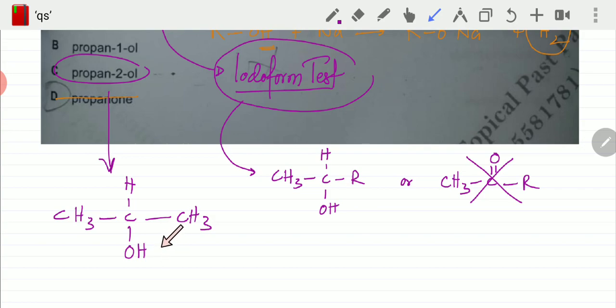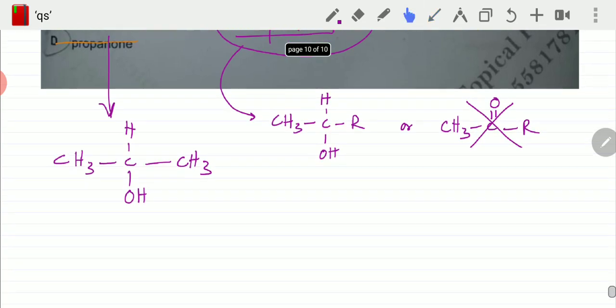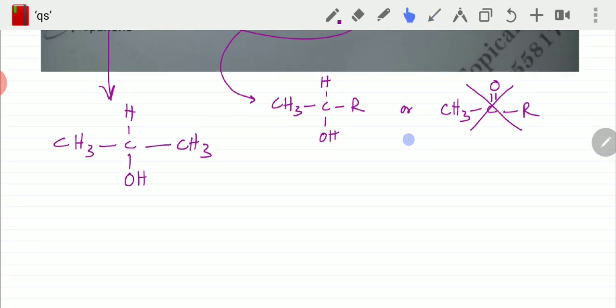Propan-1-ol would not have the structure. Even if I draw propan-1-ol, you would notice that it doesn't have this structure. There is an OH, but there is no OH next to a carbon with a hydrogen with a CH3. CH3 is very far away.